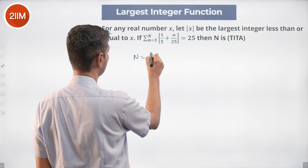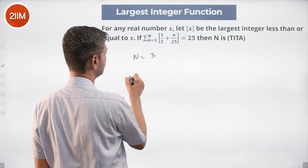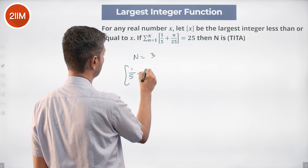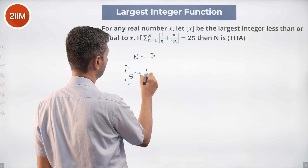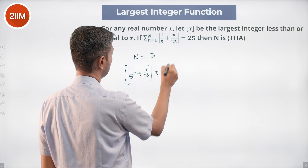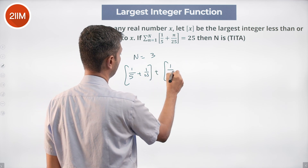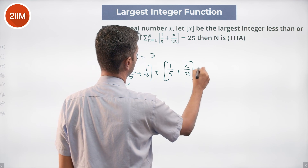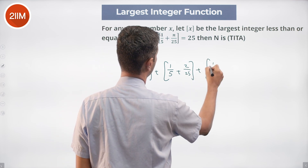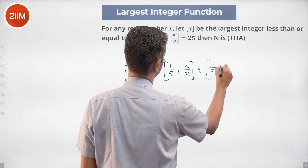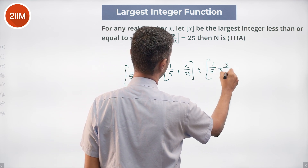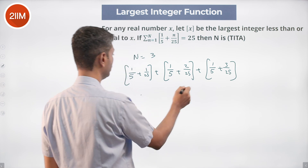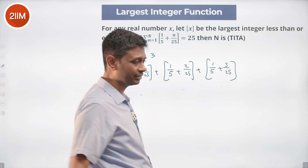So: floor(1/5 + 1/25) + floor(1/5 + 2/25) + floor(1/5 + 3/25). All of these are 0, 0, 0 — this will be 0.